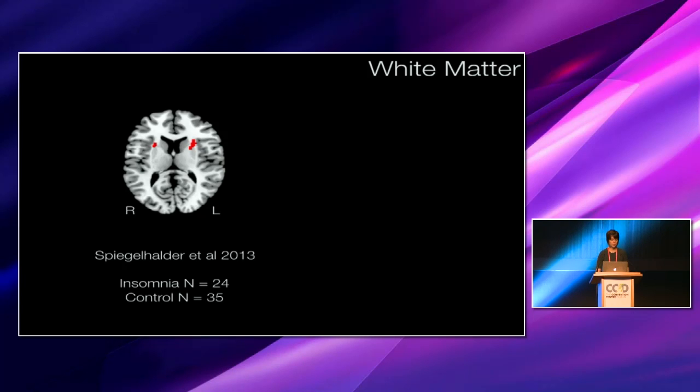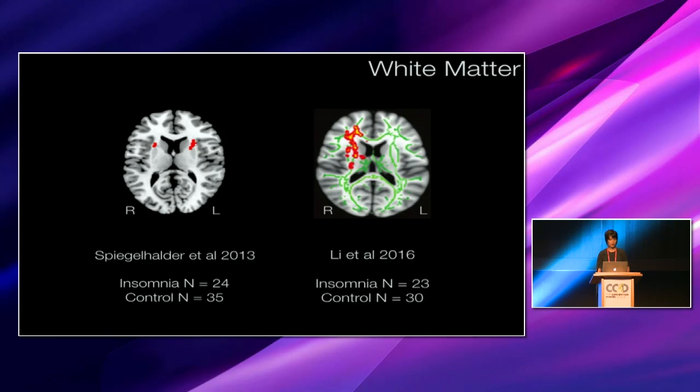And to date, there's been two DTI studies that have explored this hypothesis by comparing participants with a clinical diagnosis of insomnia to control participants. So in 2013, Kai Speer-Gordharder and colleagues reported reduced FA in the right anterior internal capsule with a trend in the left internal capsule in a sample of 59 participants. And this year, Lee et al. reported reduced FA in increased radial diffusivity in an overlapping but slightly more widespread frontal subcortical tracts in a sample of 53 participants.